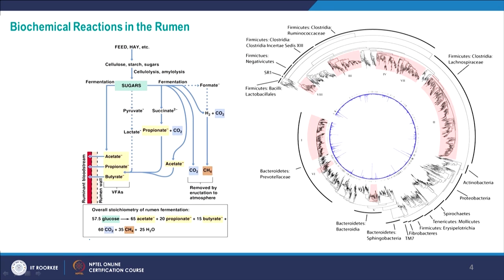In hindgut fermenters, because there is no foregut fermentation, when fermentation happens in the hindgut — either in the cecum or colon — a lot of nitrogen that has been degraded becomes part of biomass, is not absorbed by the body, and is released in the excreta. Now, looking at what happens in the rumen of ruminants, the feed — which is hay, grass, or other things rich in cellulose, starch, and sugar — undergoes cellulolysis and amylolysis, breaking down into simpler sugars in the rumen through bacterial degradation.